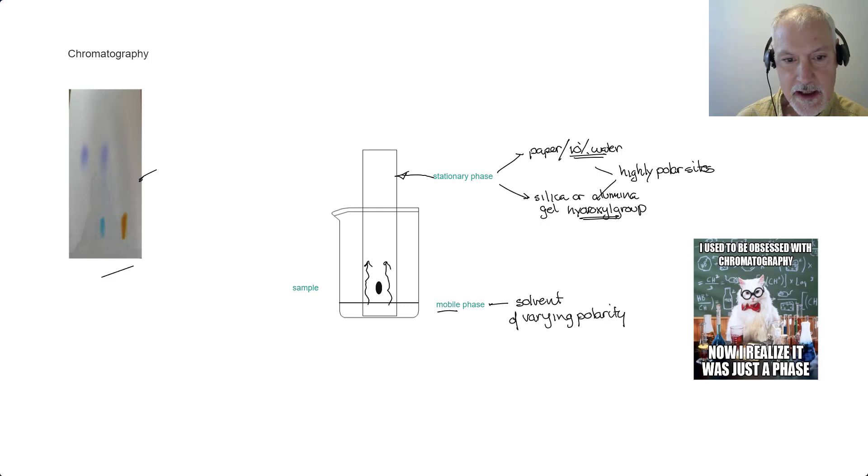As it moves up, it will be dragged through our sample, which is a mixture of components. These components will have different solubilities in the stationary phase or the mobile phase. Let's start by saying we have a component that's attracted or very soluble in our stationary phase. As a result, it won't move very far, so it might move a small distance. That's an example of a component that likes our stationary phase.